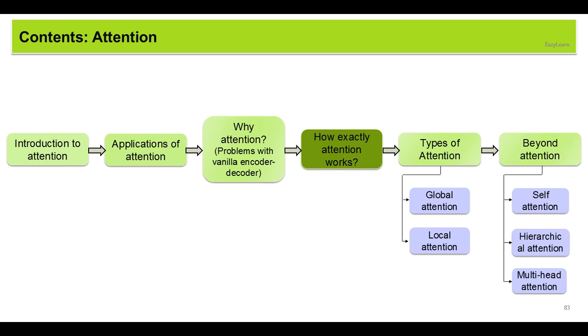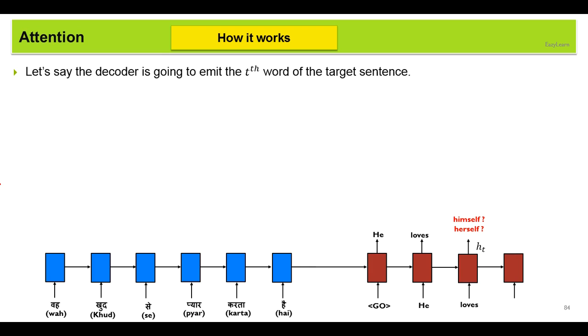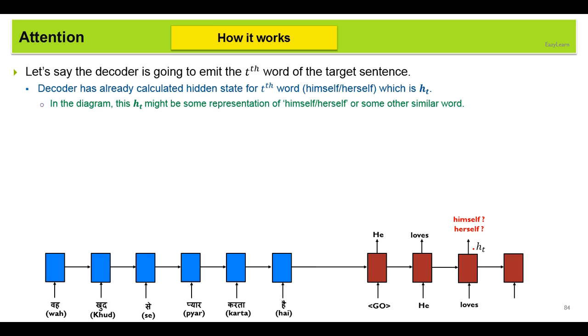Now let's see how exactly the attention works. Let's say the decoder is going to emit the tth word of the target sentence. The decoder has already calculated the hidden state for the tth word, which is ht, without the attention mechanism. Now this ht might be some representation of the word himself or herself, not necessarily himself. It could be himself, herself or any other similar word. But the decoder is not sure of the word himself.